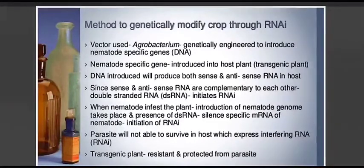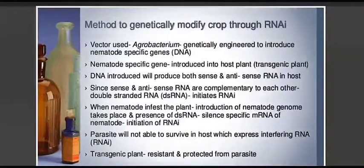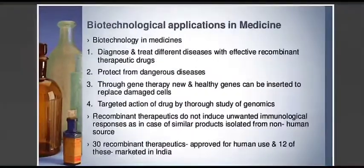When nematode infestation occurs in the plant and the nematode genome is introduced, the presence of double-stranded RNA will silence the specific mRNA of the nematode. This concept is called RNA interference. As a result, the parasite will not be able to cause any harm to the host, and the transgenic plant becomes resistant and protected from the parasite. This is a very novel method and is very important from an exam point of view.